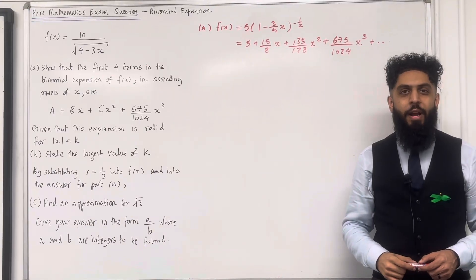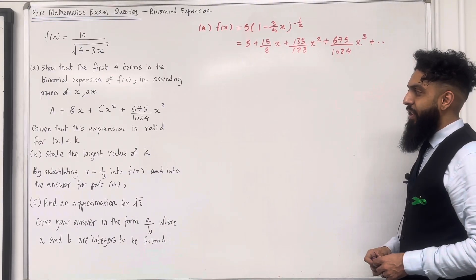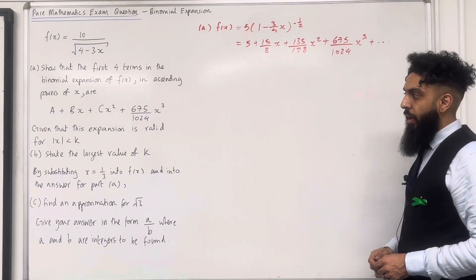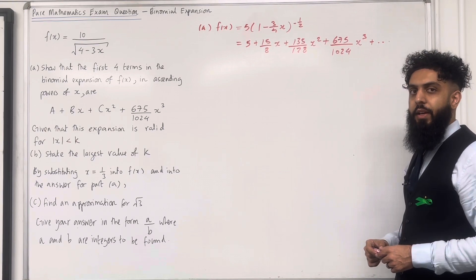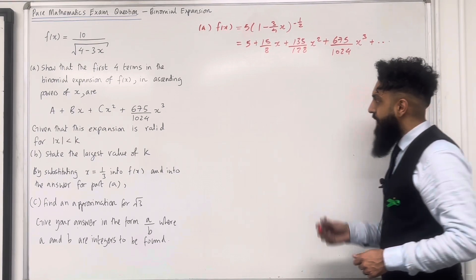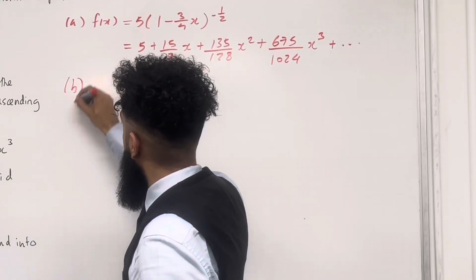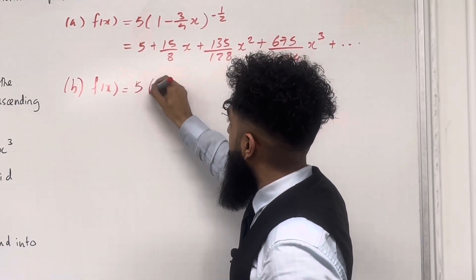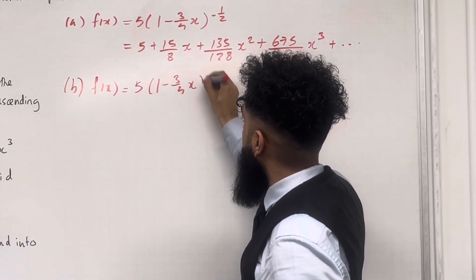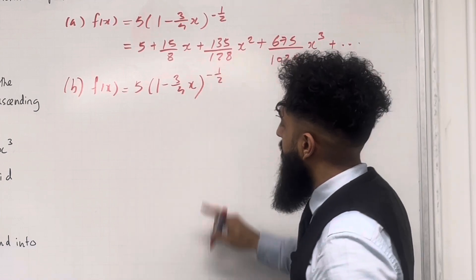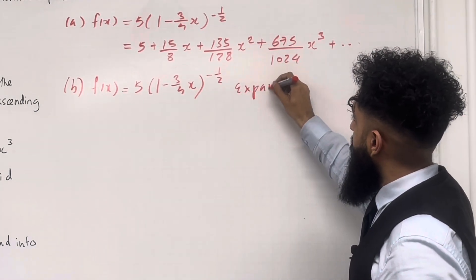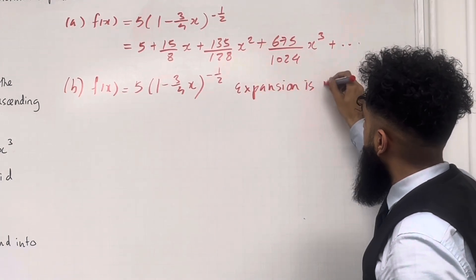Let's have a look at part B of the question. Given that the expansion is valid for mod x less than k, part B states the largest value of k. Let's have a look at the solution to part B. Now f(x) is equal to 5 multiplied by (1 minus 3 over 4 x) to the power minus a half. Now the expansion of this is invalid because the power is a negative number — we have an infinite number of terms.